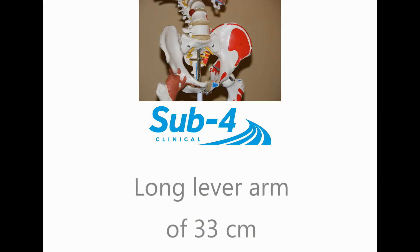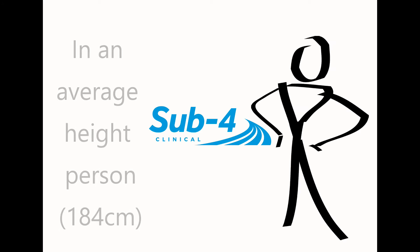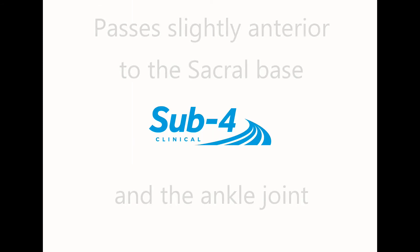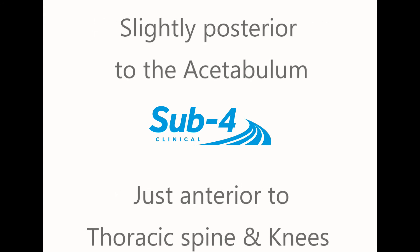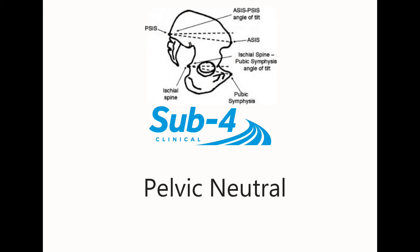This presents a long lever arm of 33 centimeters from above the level of the hip joint in the average height individual of 184 centimeters. As a result, balance of the upper body is largely dependent on a level and stable pelvis. The center of mass passes anterior to the sacral base and the ankle joint, slightly posterior of the acetabulum, but just anterior to the thoracic spine and knees. The anterior superior iliac spine and the pubic symphysis are aligned vertically.